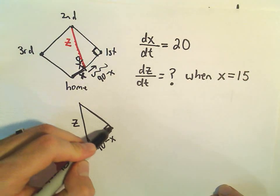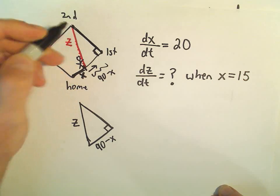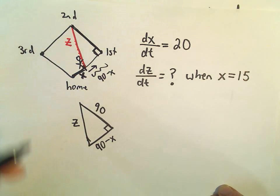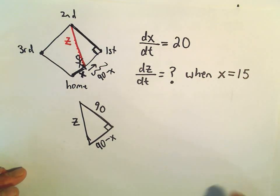Okay, notice this side of our triangle is going to correspond to the distance between first and second. And that wouldn't change in this problem. That's going to stay 90 feet because he's only running from home to first base.